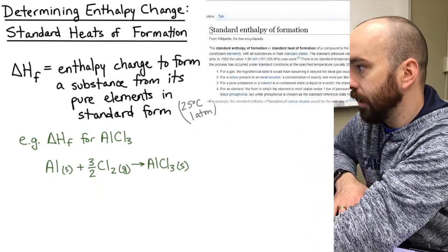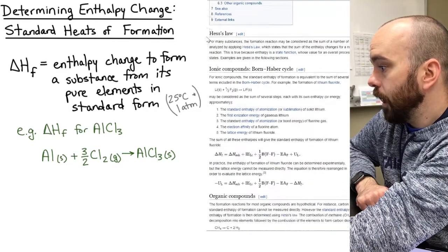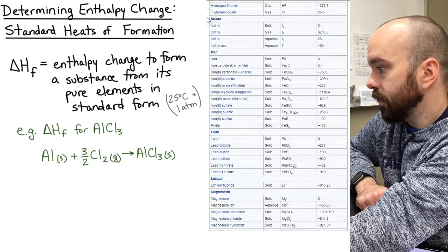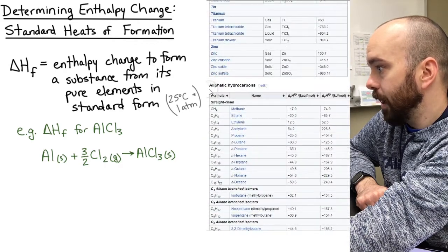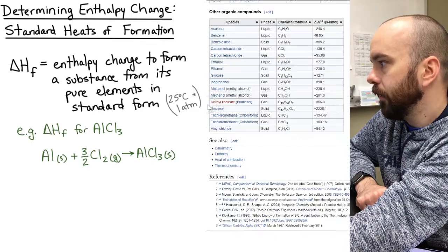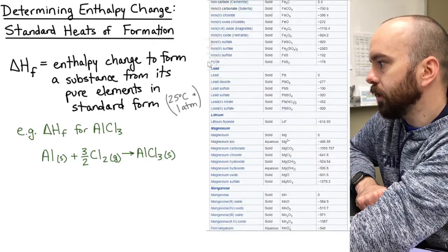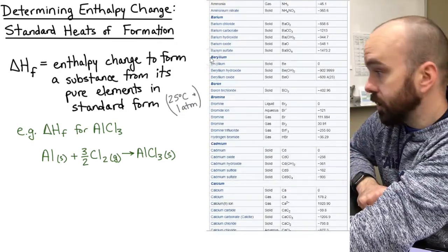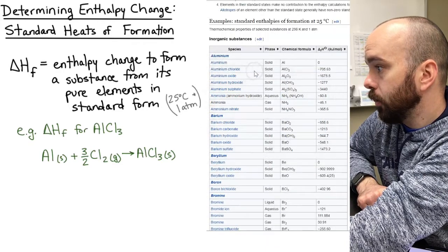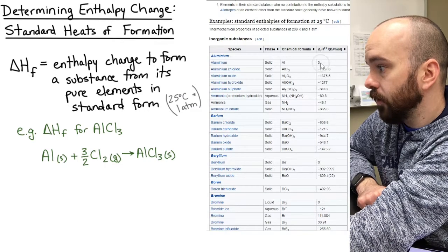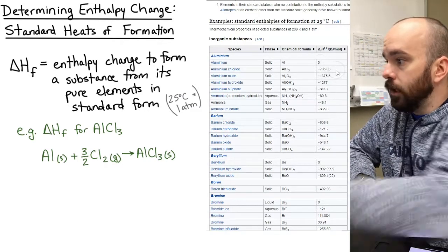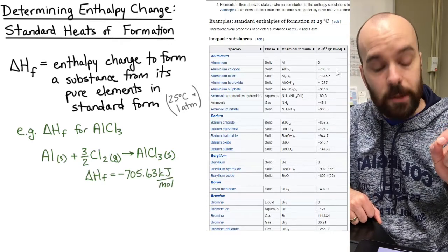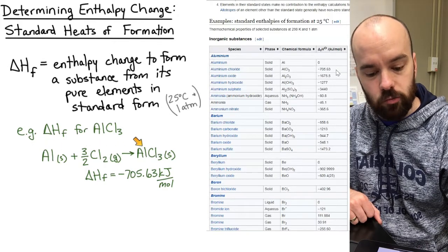Let me pull up the standard enthalpy of formation page on Wikipedia. Scrolling down to the inorganic substances table, I find aluminum chloride listed as negative 705.63 kilojoules per mole. That's the standard heat of formation for AlCl₃, and it corresponds to the reaction we just wrote.